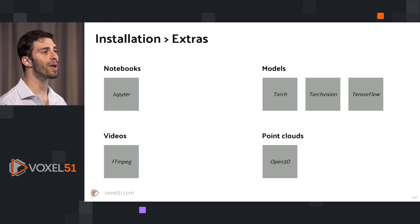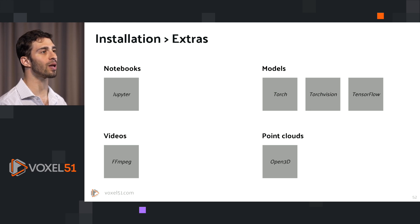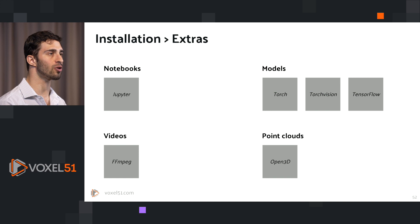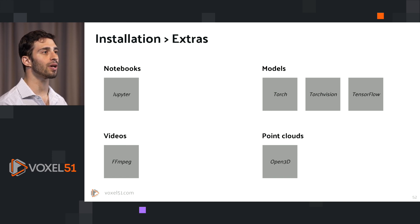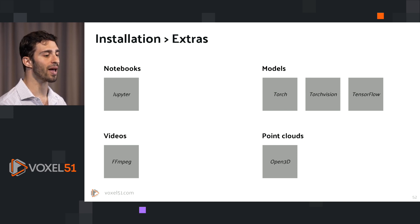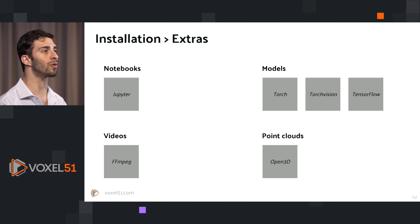In addition to FiftyOne, you may also want to install some extras depending on your particular use case. You may want to install Jupyter notebooks, or torch and torchvision, or TensorFlow depending on which models you want to work with. If you're working with videos, you may want to install FFmpeg, and for point clouds, Open3D. None of these are strictly necessary to start working with FiftyOne, but depending on your application they might be useful.